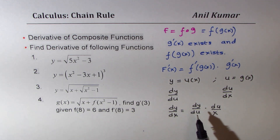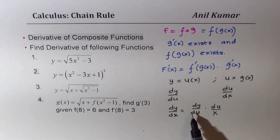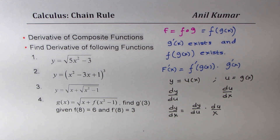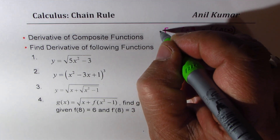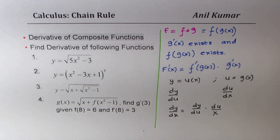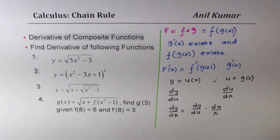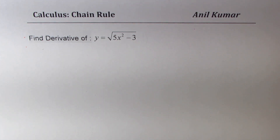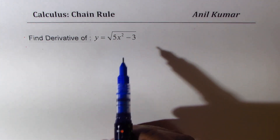So it is derivative of outside times derivative of inside — kind of a chain. We'll explore this property with the help of examples. The basic concept should be clear, but once we take a few examples it will be absolutely clear. Let's take the very first example: y equals the square root of 5x² minus 3.